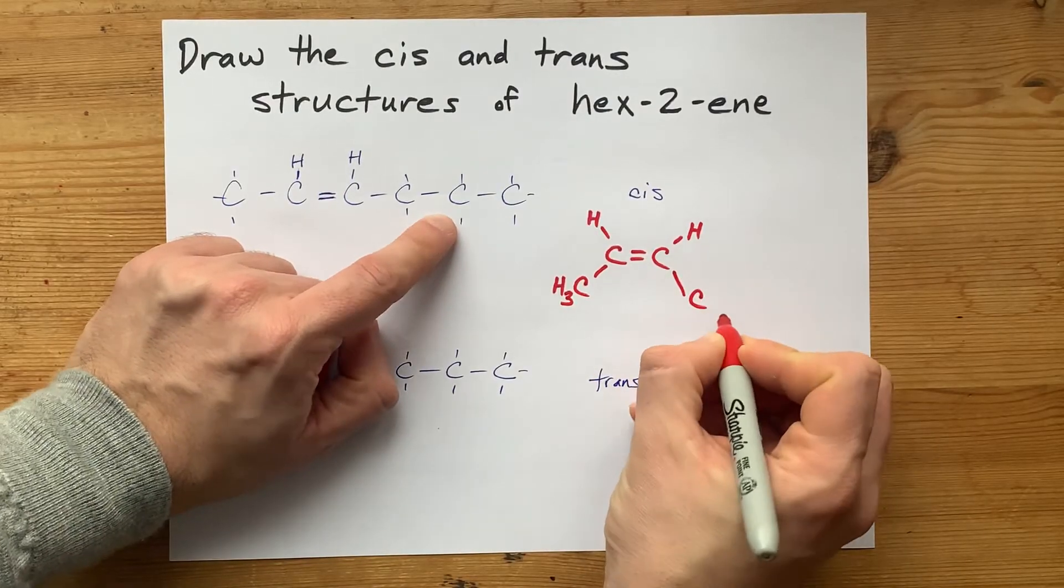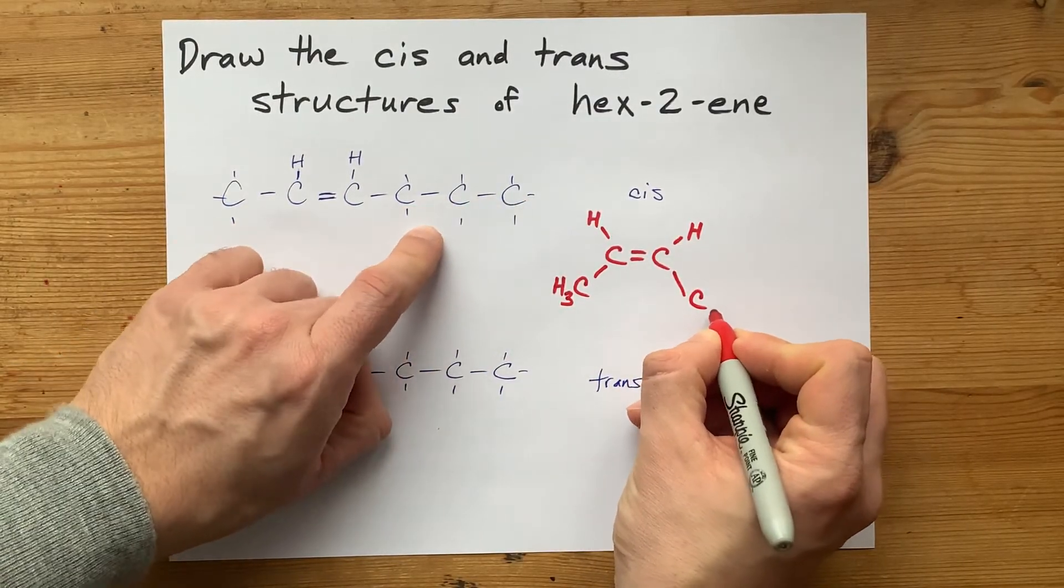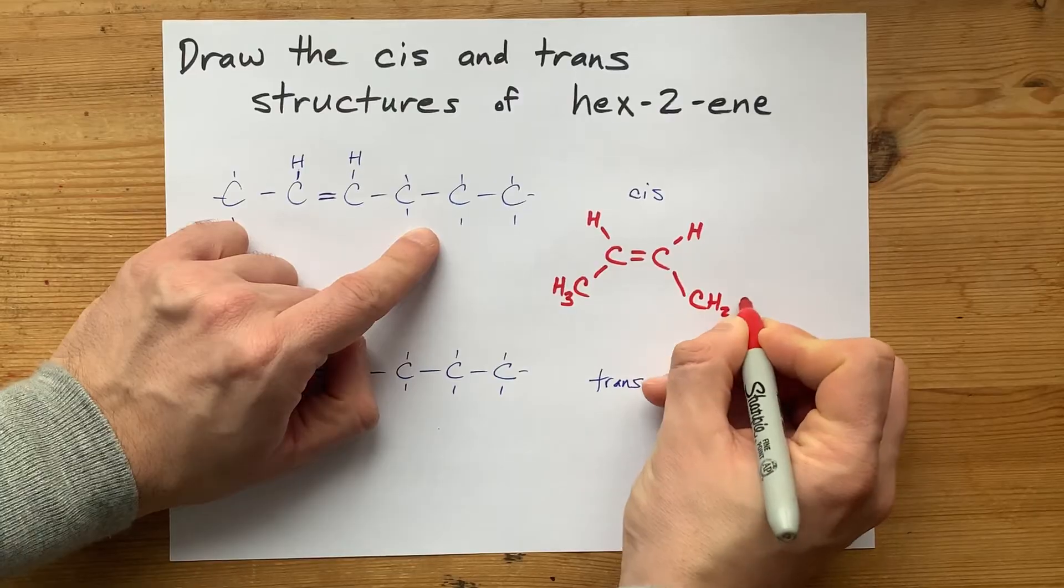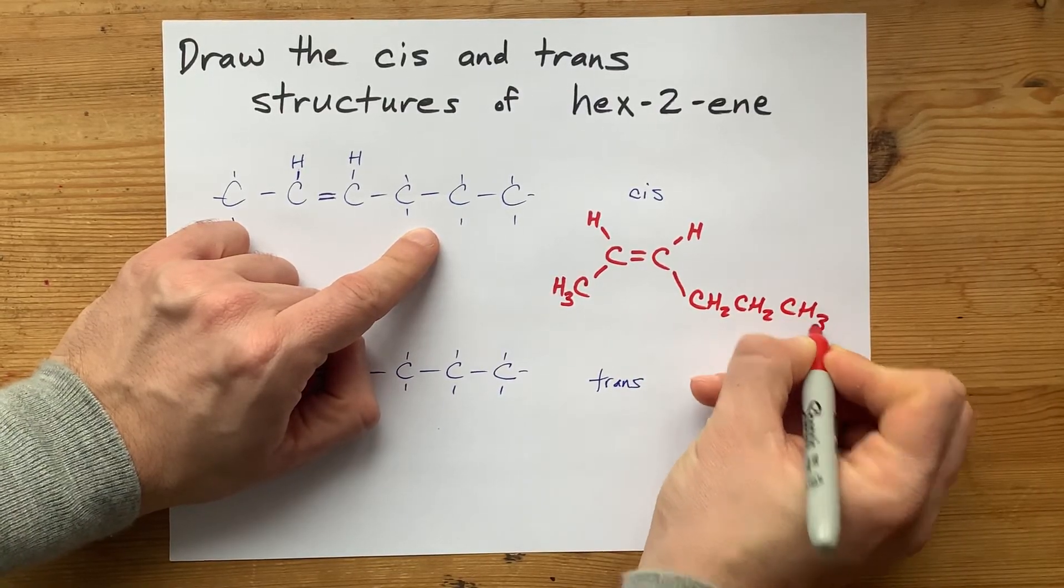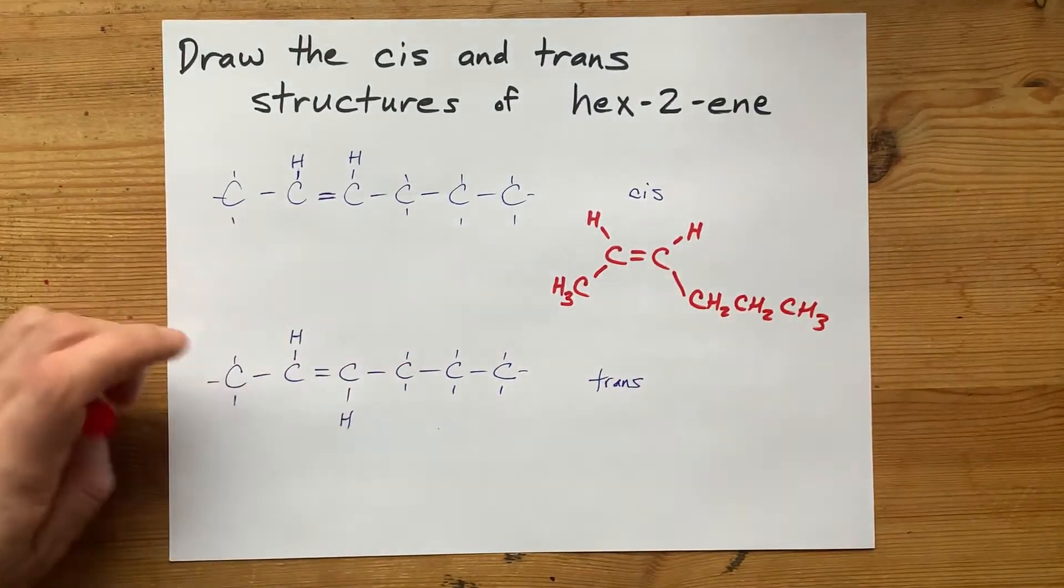And down here, we actually have, I guess that's a propyl group. I'm going to write CH2, CH2, CH3. Just so you can see that there are still six C's there.